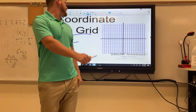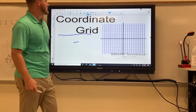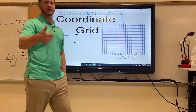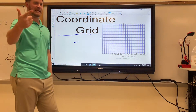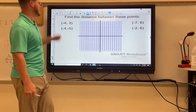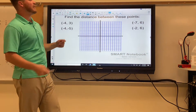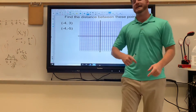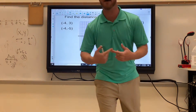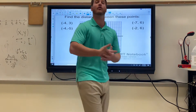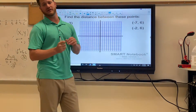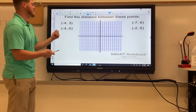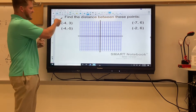Today is a quick review on coordinate grid — distance on a coordinate grid and reflections. When we find the distance between two points, they have to share a value — the same x-value or the same y-value. This tells us whether it's a straight horizontal or vertical line.